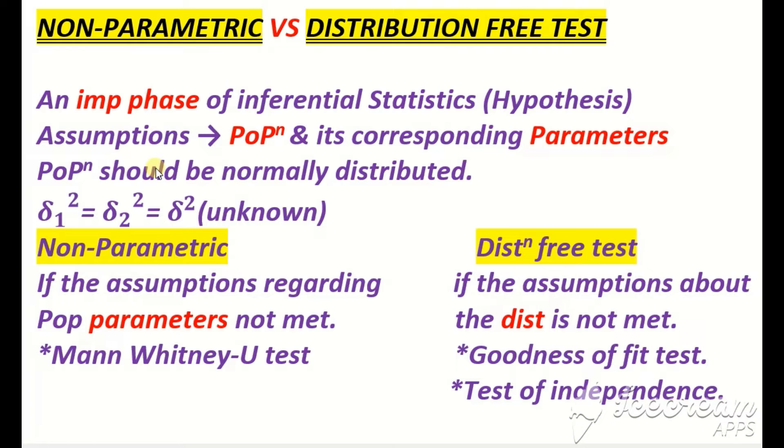If it is unknown, then definitely we will use t-test. In two sample t-test, we say that both the population variances are equal. They will be equal, but they will be unknown. This is a very popular assumption. We call it homoscedasticity assumption. Homo means same and scedasticity means variances.